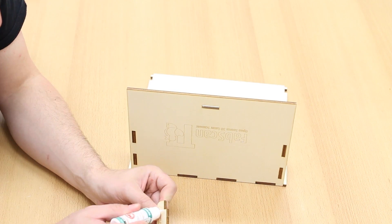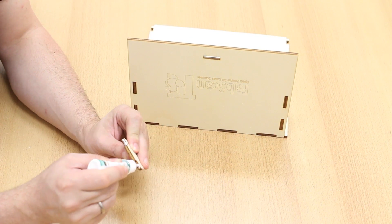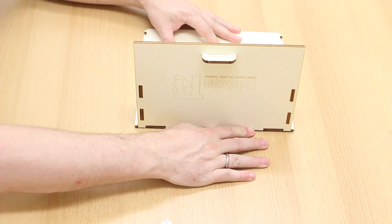So now we have to glue the hinge to the lid. Just a little bit of glue. And stick it in. Done.